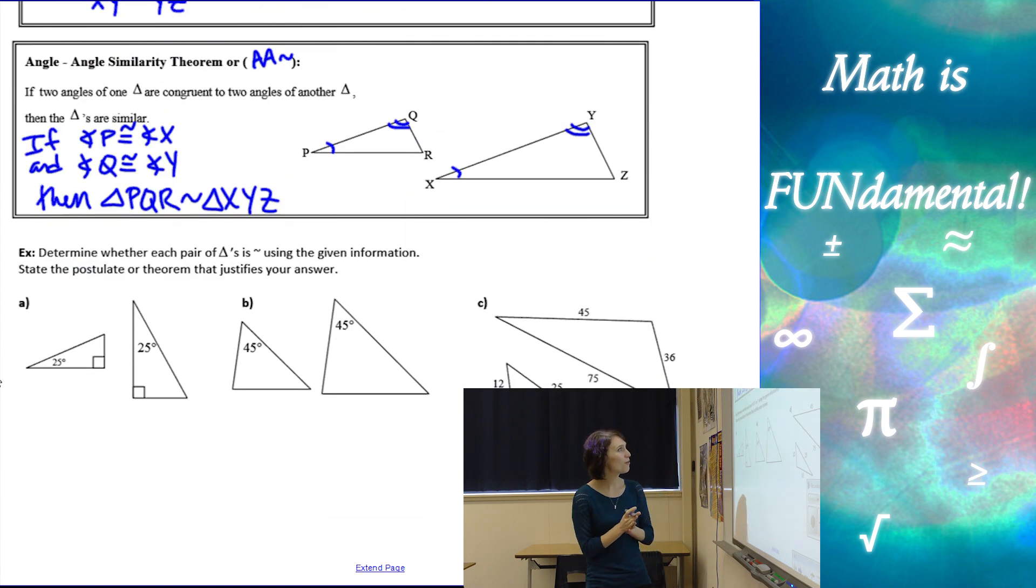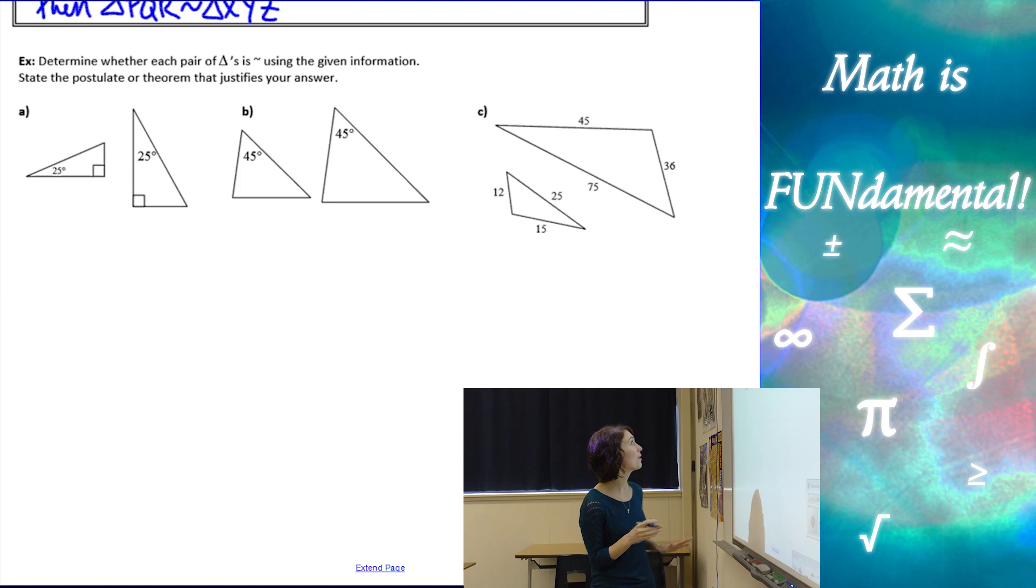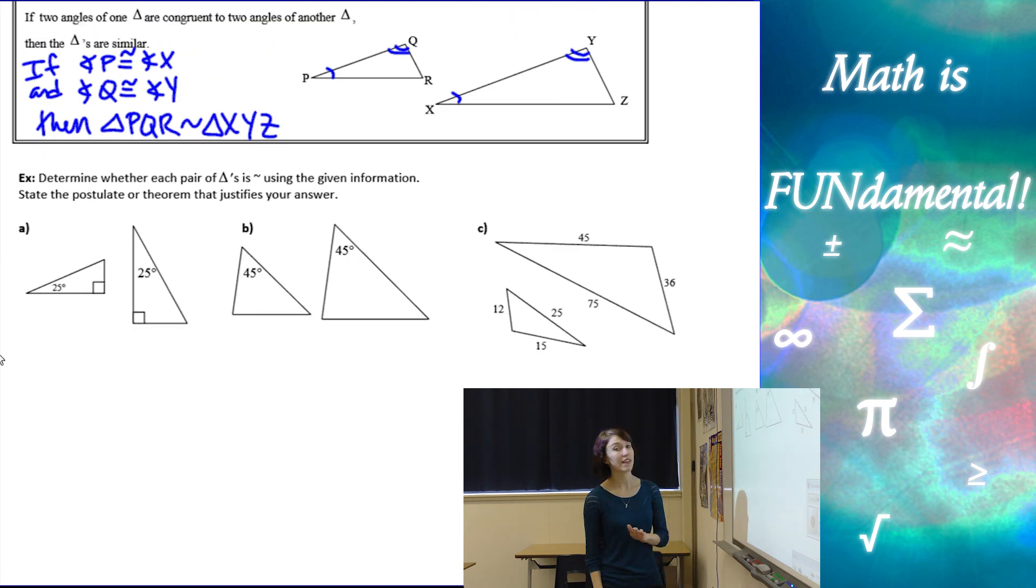So now we are going to do a couple examples. We're going to determine whether each pair of triangles is similar and then state the theorem or postulate that gives us our answer.